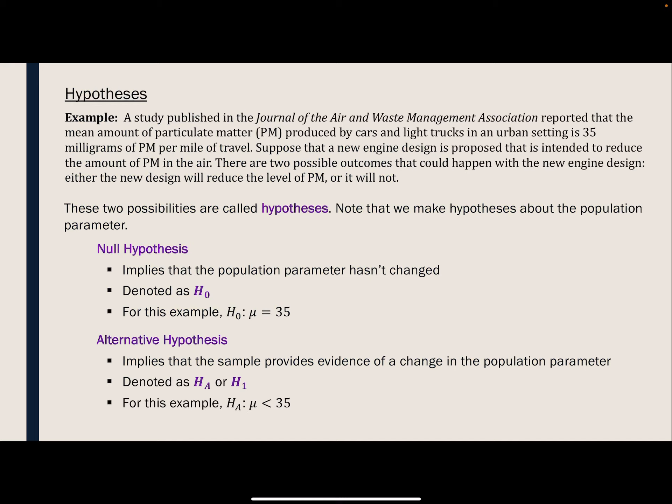When we talk about hypothesis tests, we need to talk about hypotheses. And the easiest way to do this is to start with an example. So we have a study published in the Journal of Air and Waste Management Association reported that the mean amount of particulate matter produced by cars and light trucks in an urban setting is 35 milligrams of particulate matter per mile of travel. Suppose that a new engine design is proposed that is intended to reduce the amount of particulate matter in the air. There are two possible outcomes that could happen with a new engine design. Either the new design will reduce the level of particulate matter or it will not. These are the hypotheses.